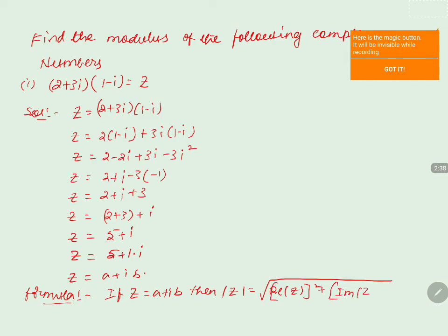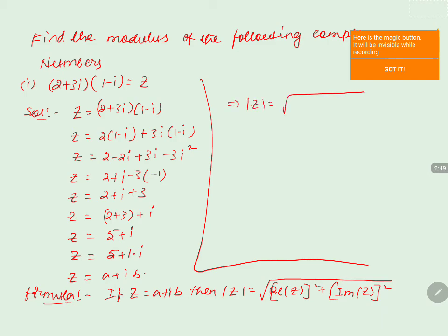Based on this formula, modulus of z equals square root of a² plus b², that is square root of 5² plus 1² equals square root of 25 plus 1, which gives modulus of z equals square root of 26.